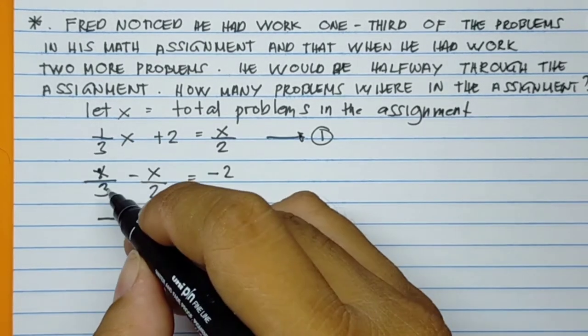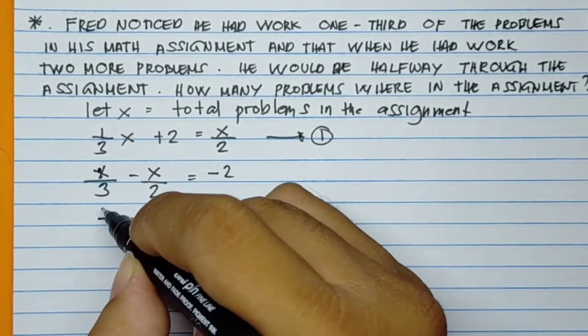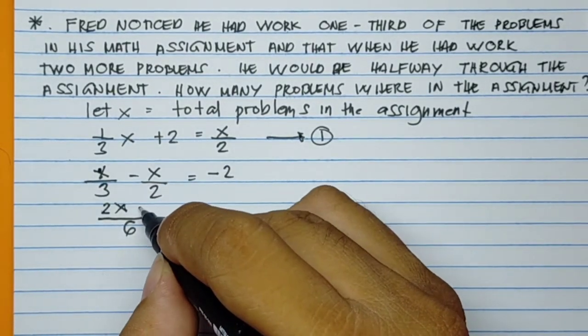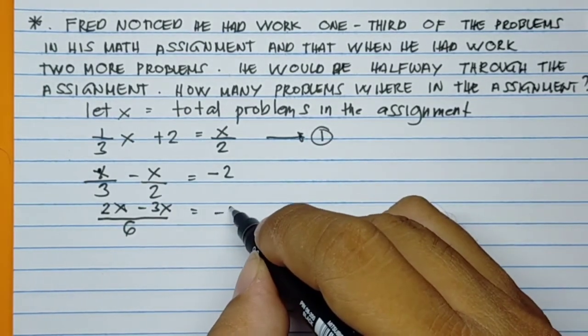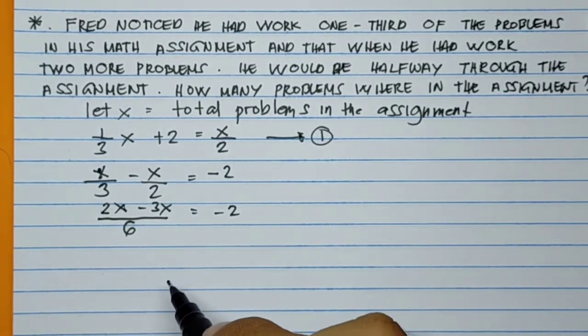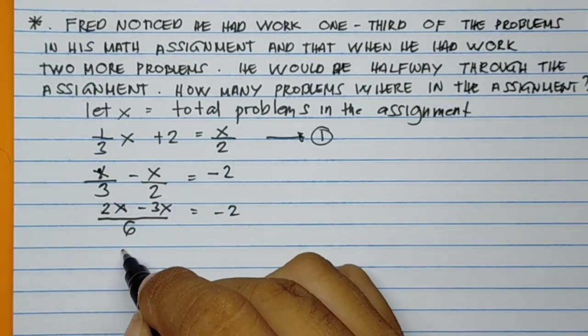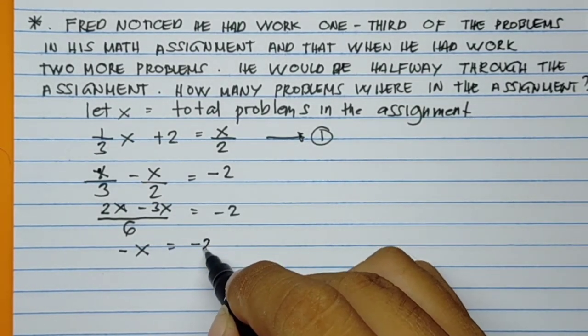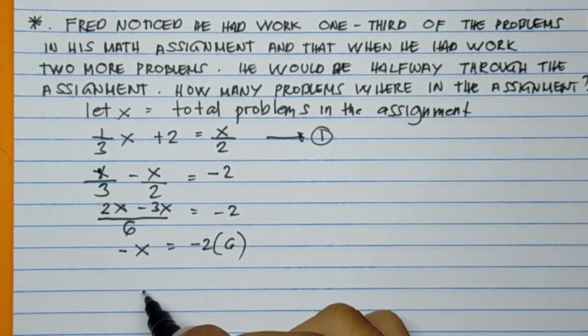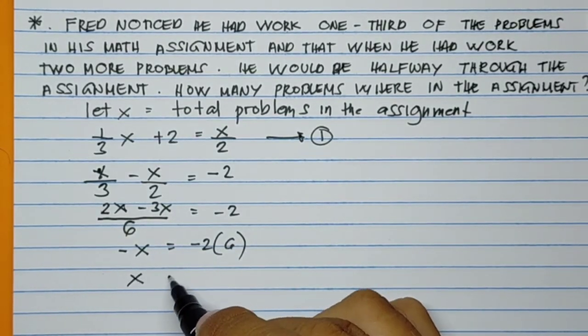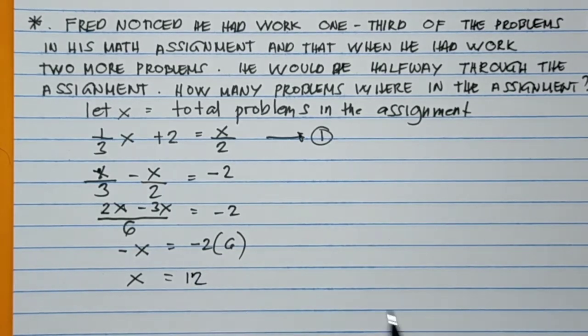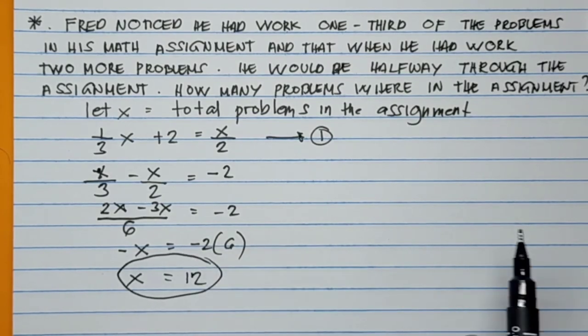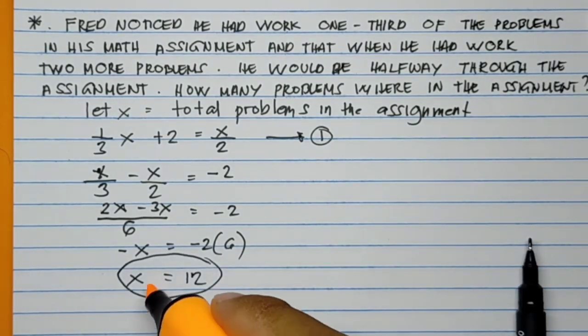So here you get the factors of 6. 6 divided by 3, 2 times X, that will become 2X. So here, again, 6 divided by 2, so minus 3X equals negative 2. So you just simplify. This will become negative X equals negative 2 times 6. So this will be positive. So X equals 12. Therefore, 12 is the total problems in the assignment.